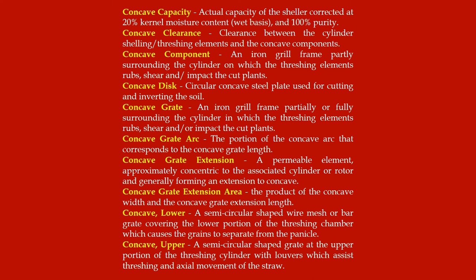Concave grate: an iron grill frame partially or fully surrounding the cylinder in which the threshing elements rub, shear or impact the cut plants. Concave grate arc: the portion of the concave arc that corresponds to the concave grate length. Concave grate extension: a permeable element approximately concentric to the associated cylinder or rotor, generally forming an extension to the concave. Concave grate extension area: the product of the concave width and the concave grate extension length.